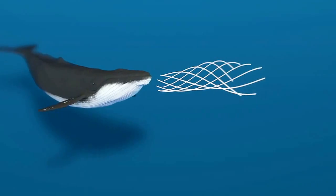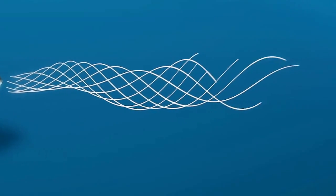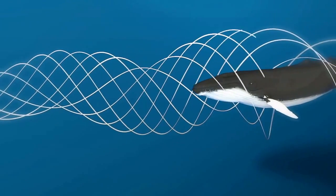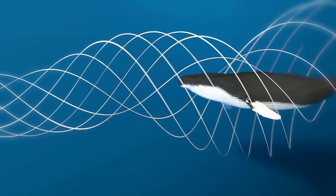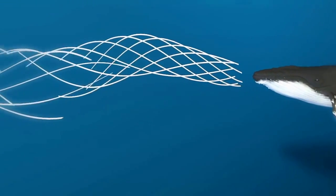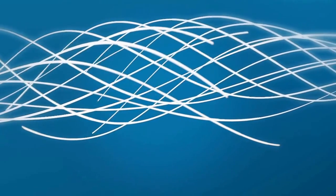Cetaceans often communicate with each other. They stay in touch by calling to each other when spread out and likely exchange information on the occurrence of prey or predators. Some species can only reproduce because they can communicate over hundreds of kilometers and thus find each other.